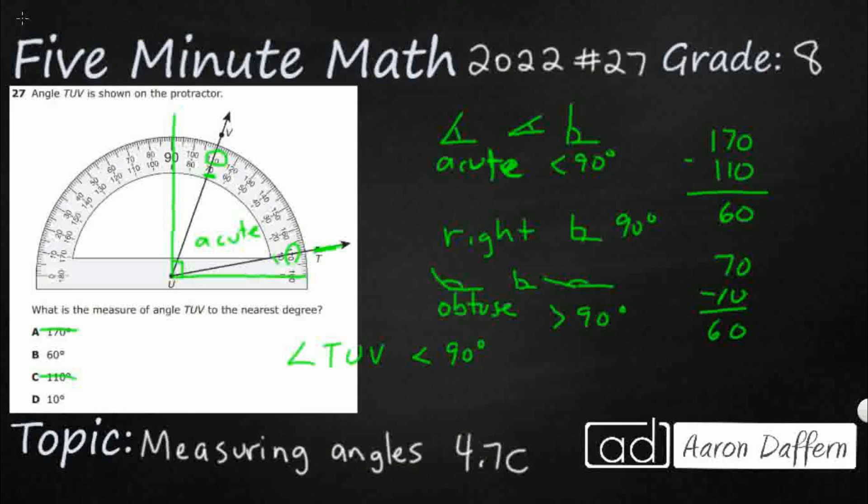So why would they give you two sets? Well, when you're actually using a protractor to draw, you always want your starting line to be on one of the zeros to the left or the right. And then it just depends on whether your angle opens to the left or opens to the right because all angles don't open in the same direction. So that's why they give you numbers on the inside and the outside.